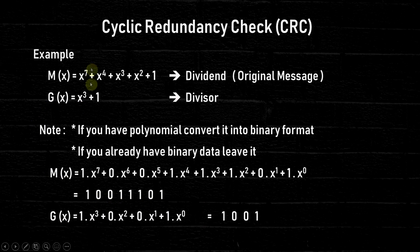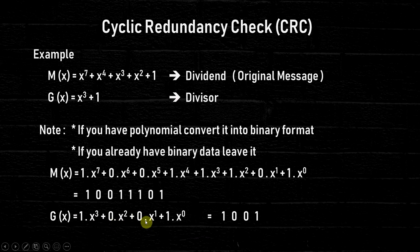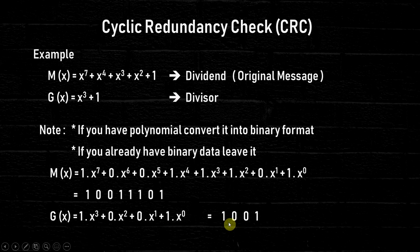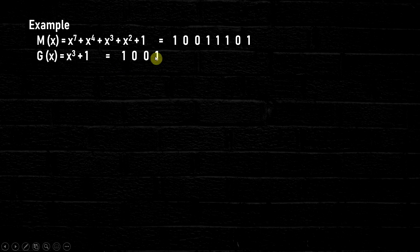Now we do the same thing for G(x). We have x^3, so coefficient 1; no x^2, so 0; no x^1, so 0; and 1 times x^0, so coefficient 1. Taking the coefficients gives us 1 0 0 1 as the binary format of G(x). Now we have the binary representations of both M(x) and G(x).